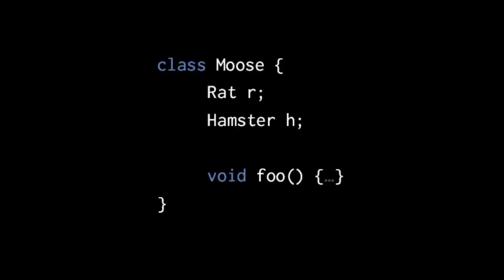Here's a trivial example class given the name Moose. Moose is defined to have two fields: r, which is of type Rat, and h, which is of type Hamster. It has one method called foo that takes no arguments and returns void. It's the convention in Java that all class names begin with a capital letter. Also note the lack of a semicolon after the end curly brace — unlike struct definitions in C, you never put a semicolon when defining a class. By convention, fields are put above methods, though this isn't required.